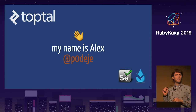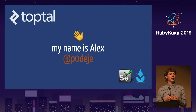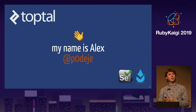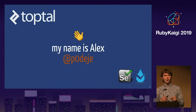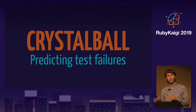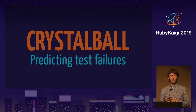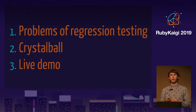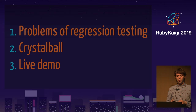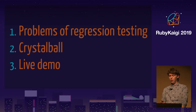A small announcement: yesterday we tagged a new major version of Selenium called Selenium 4 Alpha 1. So if you use it, that's sort of big news. There is a parallel conference, Selenium Conf, happening in Tokyo today. However, today we're going to talk about something completely different. We're going to talk about Crystal Ball, which is a tool that allows us to predict test failures. We'll start by talking about problems of regression testing, then introduce Crystal Ball, and finally do a short live demo.